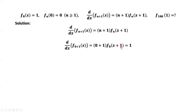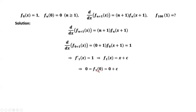For x plus 1 it is also 1. This means the first order derivative of f1 of x equals 1. Therefore, f1 of x equals x plus c. We use the second condition and replace x by 0. We have 0 equals f1 of 0 equals 0 plus c, which implies c equals 0. Therefore, f1 of x equals x.